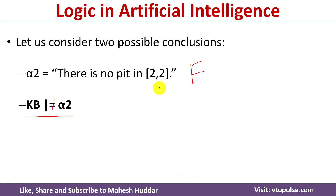This is how we can informally check the status of sentences — whether they are true or false — using logical entailment in artificial intelligence. In this video I discussed how to construct a knowledge base and how to check whether given sentences are true or false using logical entailment. If you like the video, please like, share, subscribe, and press the bell icon for regular updates. Thank you for watching.